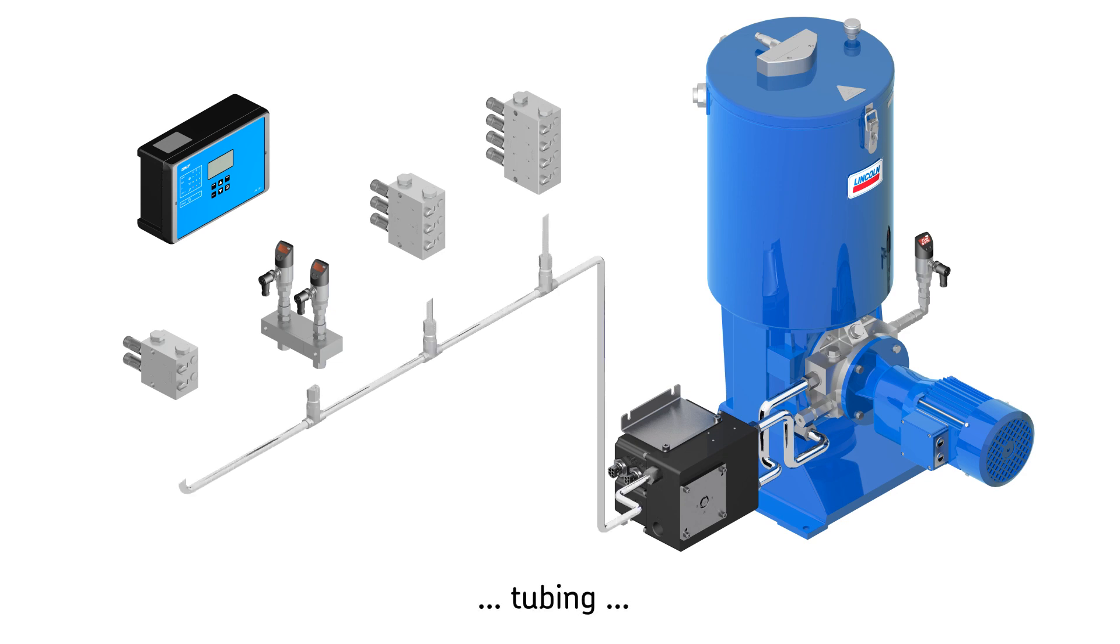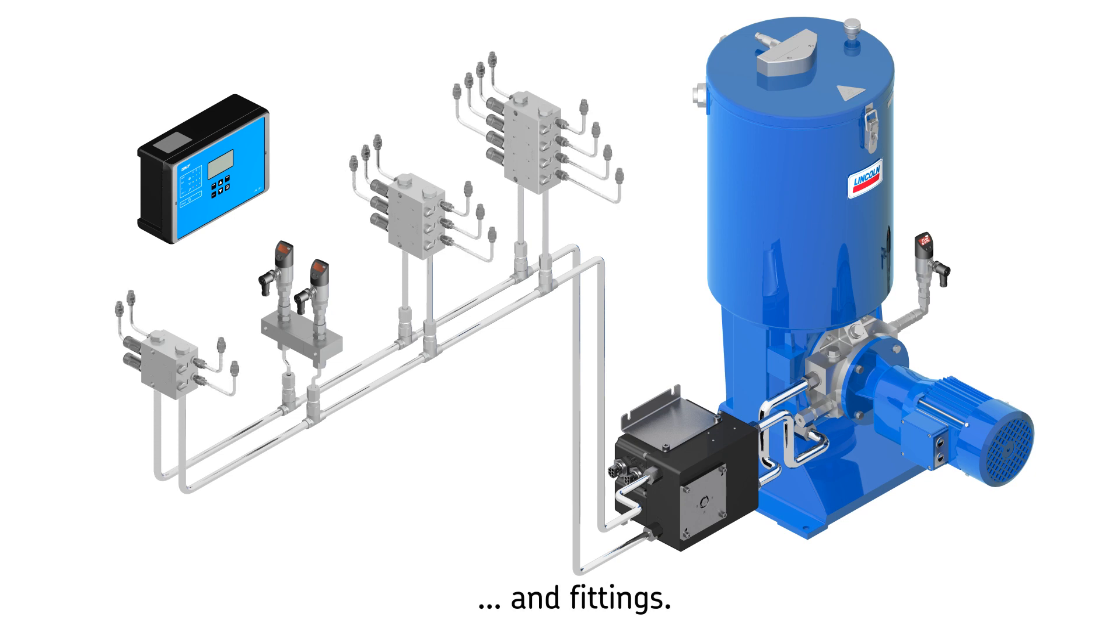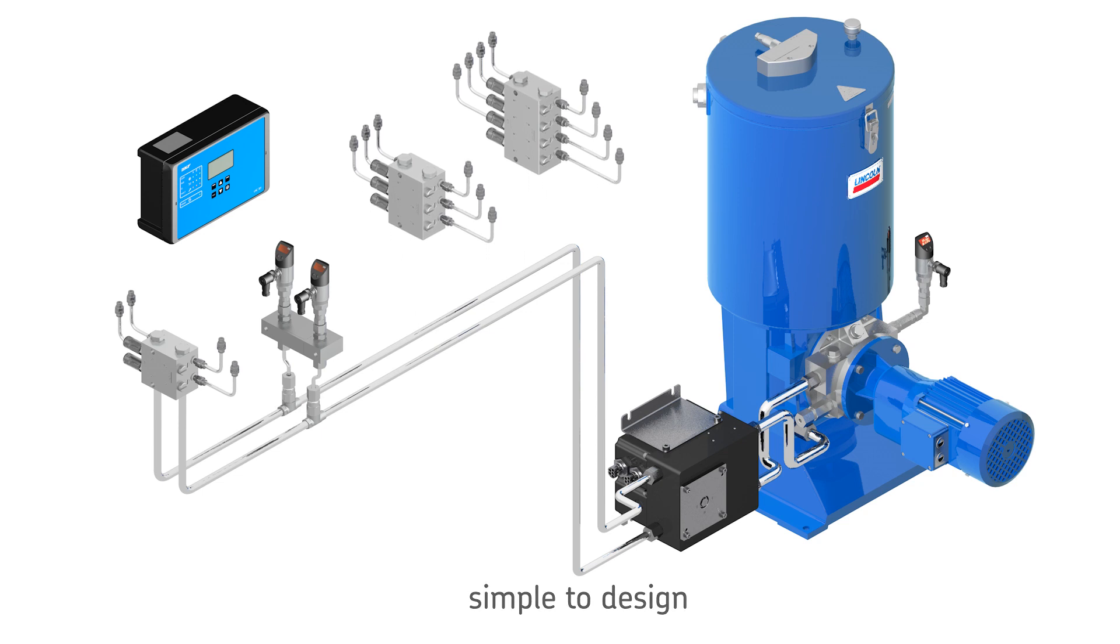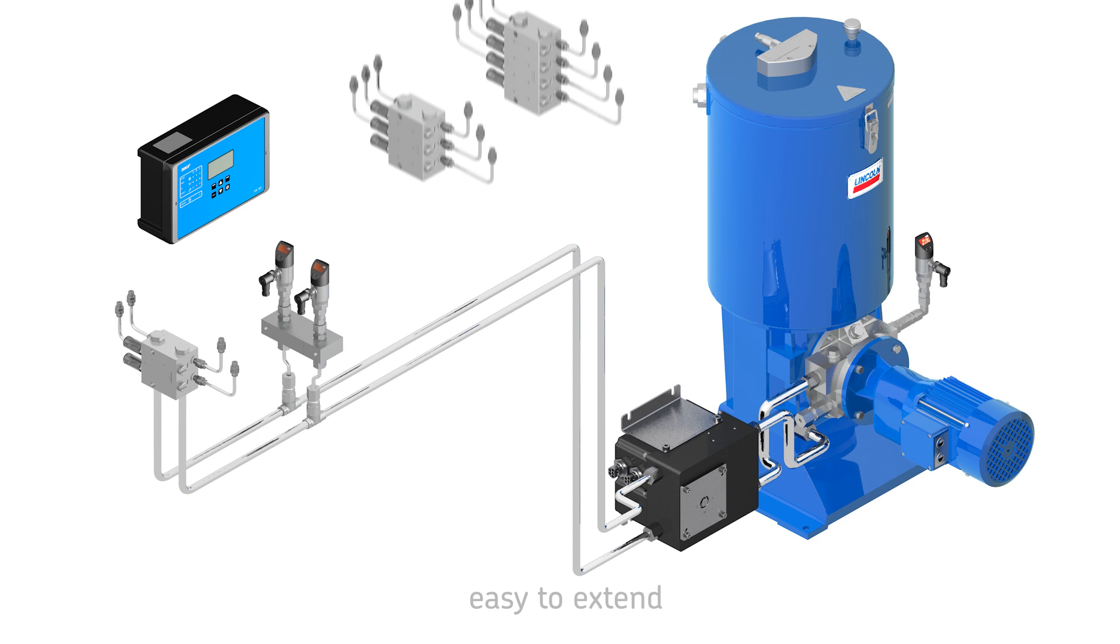Additional components include tubing and fittings. These flexible systems are simple to design and can be easily reduced by removing metering devices or extended by installing additional metering devices.